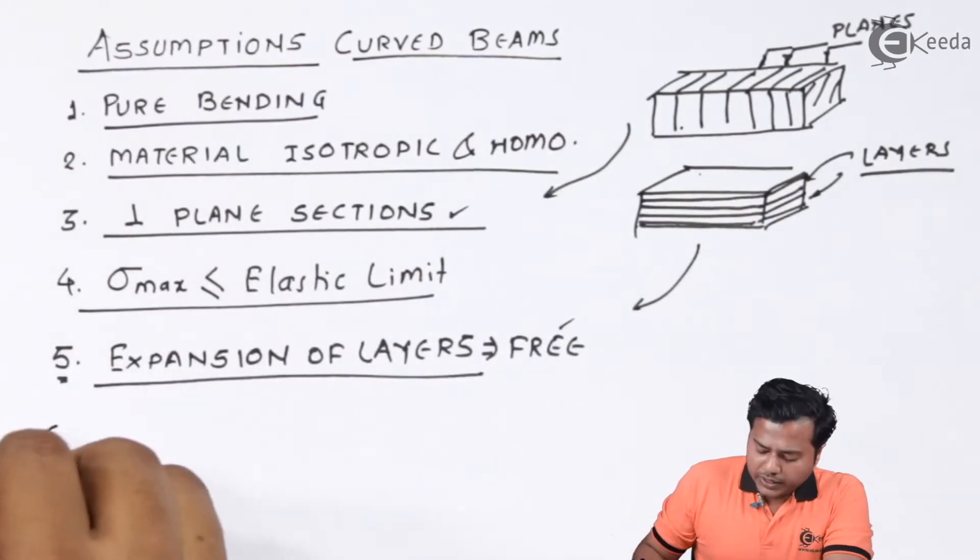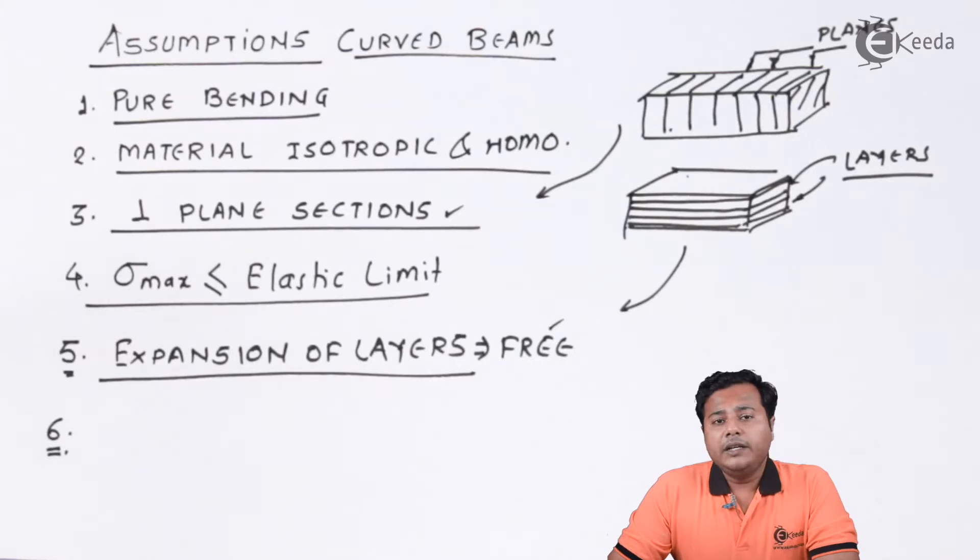Let's move on to the last assumption. We know that Young's modulus is a very important property for a material. And why it is important? Because it decides the way the material expands or the way the maximum stress is induced inside a material. So, it is assumed that the Young's modulus will remain constant for both tensile and compressive state of the curved beam.